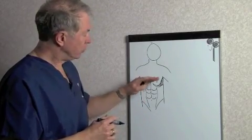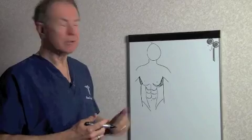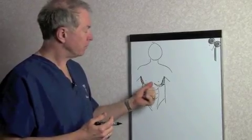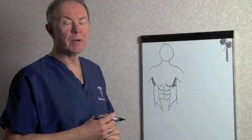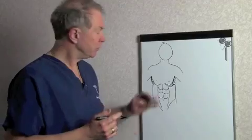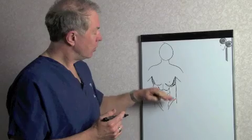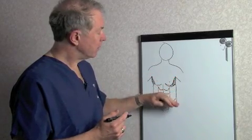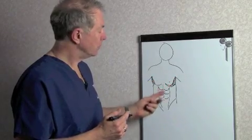By doing this, the VASER high def unveils the anatomy that's underneath. The anatomy is always there; it's just covered by a layer of fat. With traditional liposuction, doing liposuction in these areas would just make them smaller.